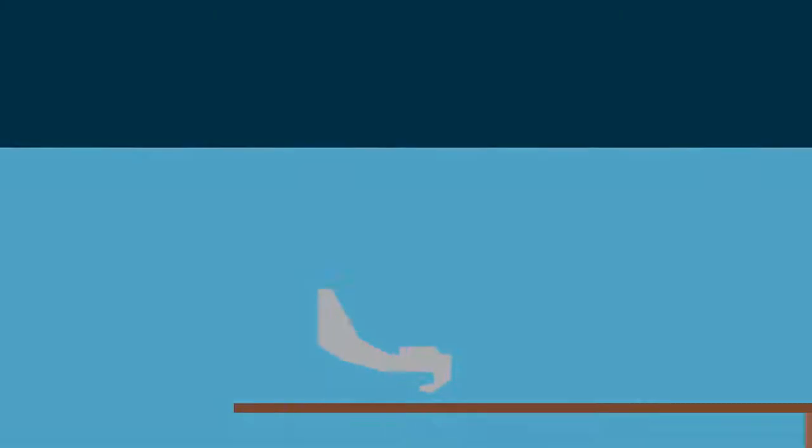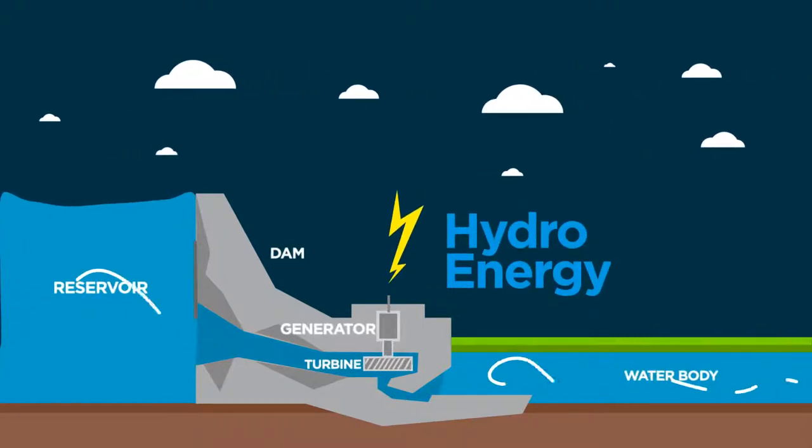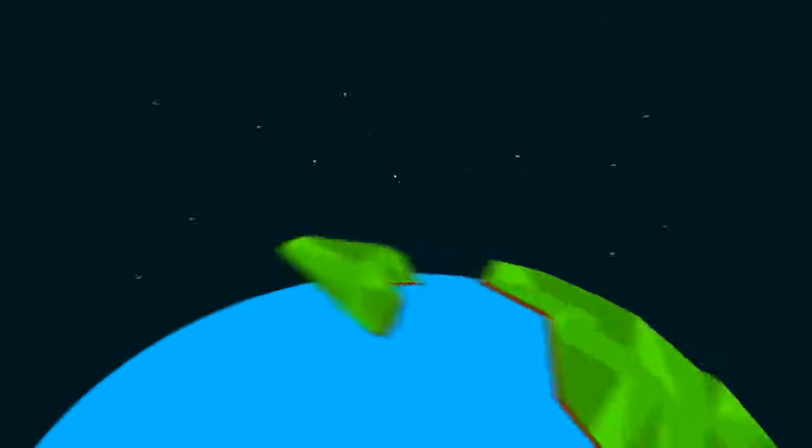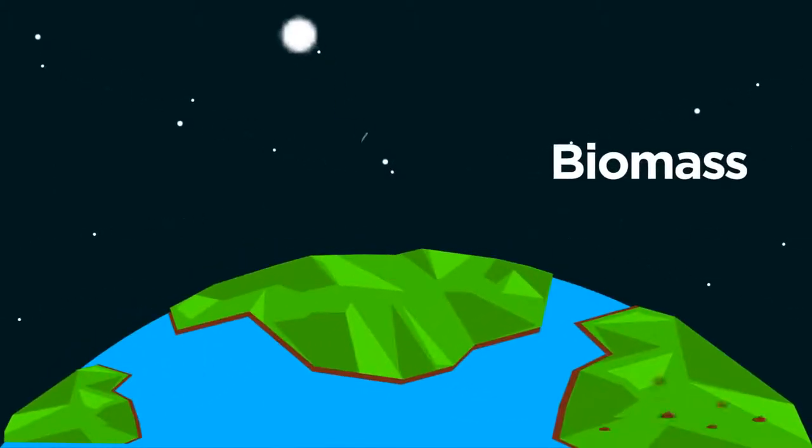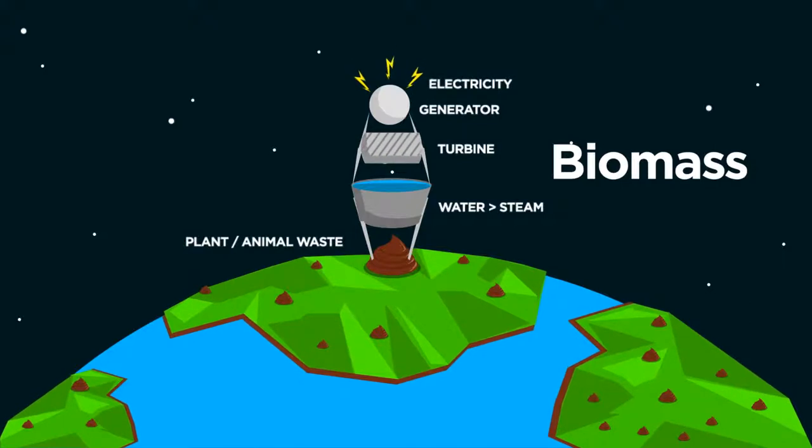Hydro energy is generated from falling water by converting the kinetic energy from its pressure to electrical energy. Biomass is obtained from natural waste. The waste is converted into heat energy in the form of steam, which spins a turbine to generate electricity via a generator.